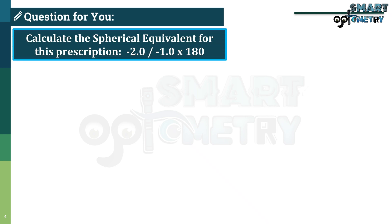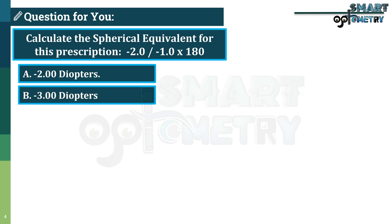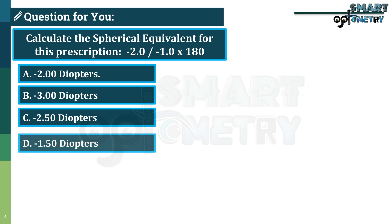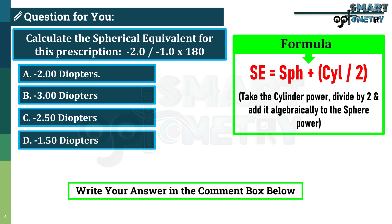Now, here is a quick practice question for you. Calculate the spherical equivalent for this prescription: minus 2 diopters sphere with minus 1 diopter cylinder axis 180 degrees. Option A, minus 2. Option B, minus 3. Option C, minus 2.5. Option D, minus 1.50. Use the formula and write your answer in the comment box.